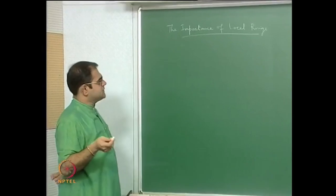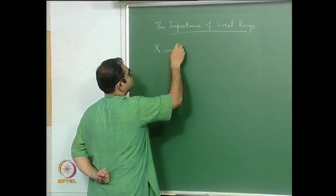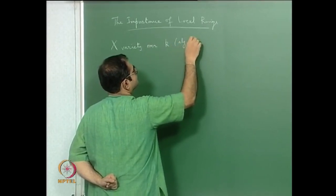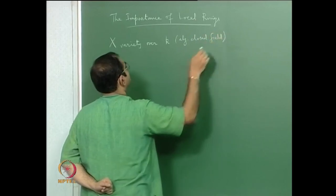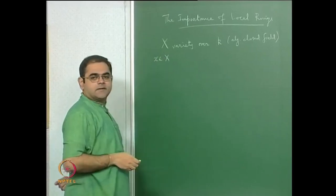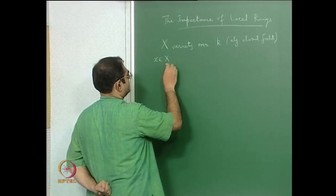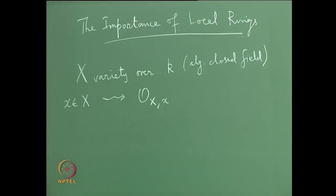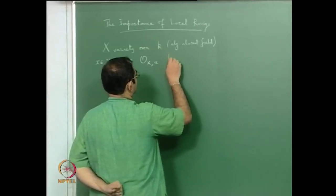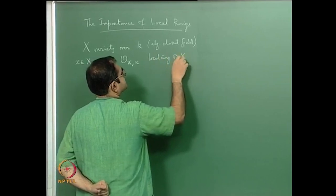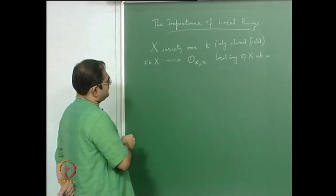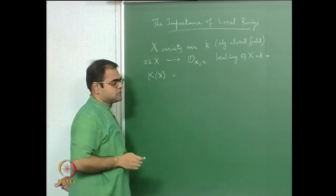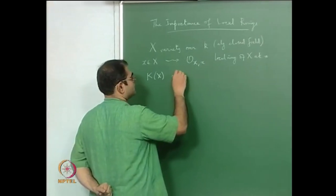So, you have already seen that if x is a variety over an algebraically closed field k and you take a point small x in capital X, then we have defined the local ring of the variety capital X at the point small x. We have also defined k(X), which is the so-called function field of X.